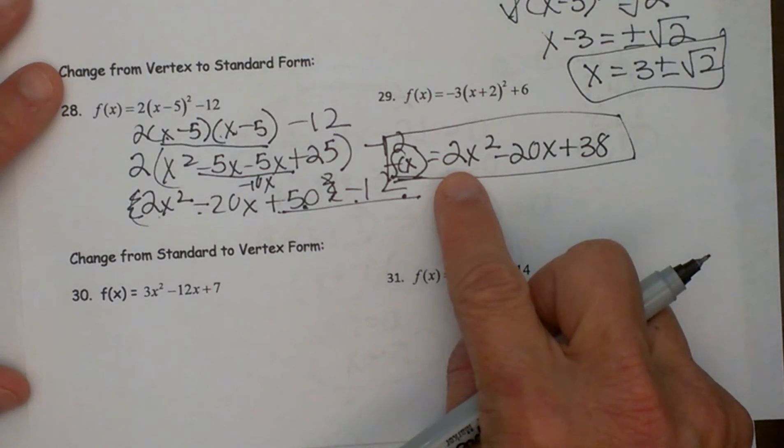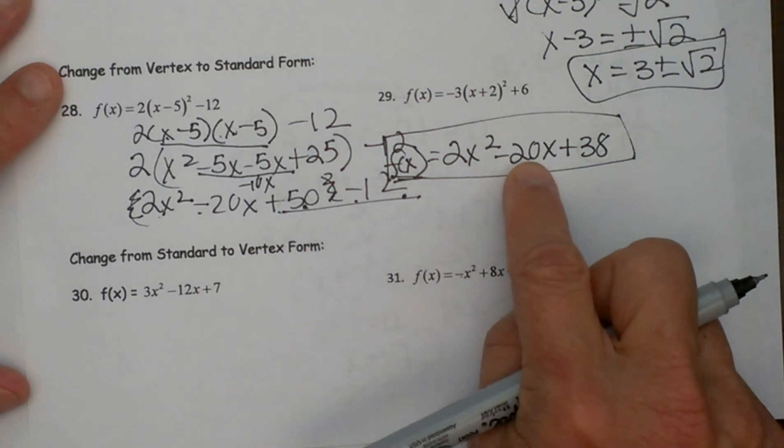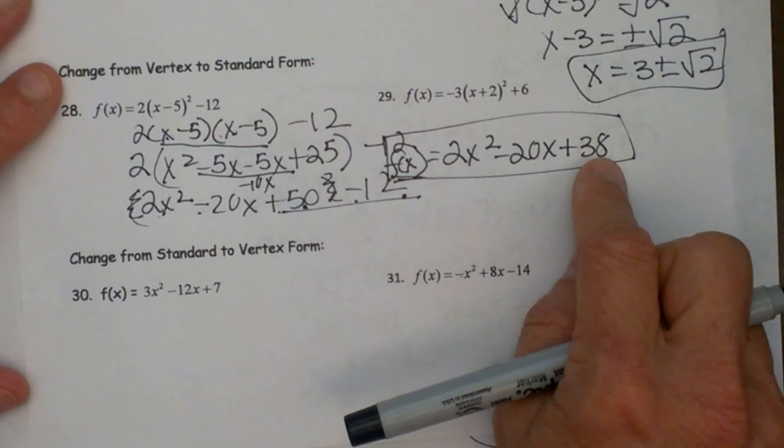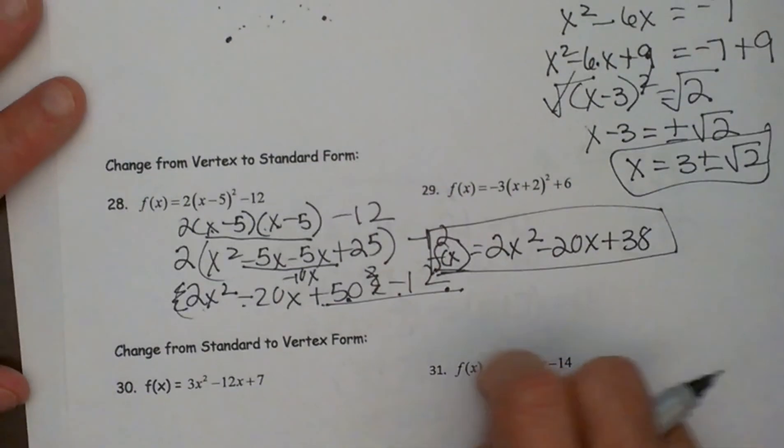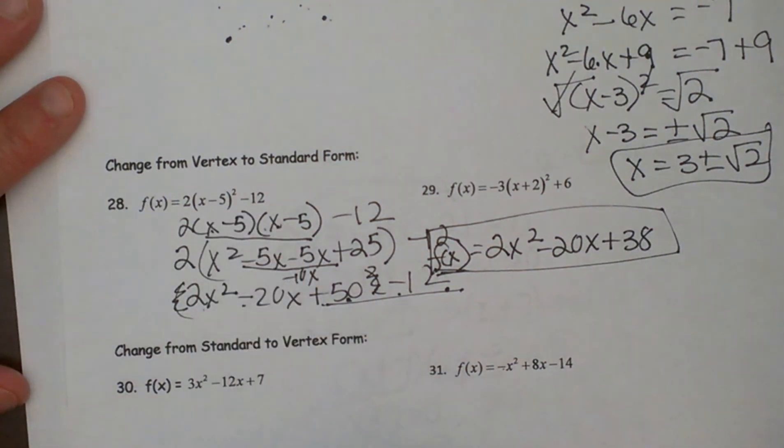So a is 2, b is negative 20 and c is positive 38. So there you go. That is how you convert from vertex form to standard form.